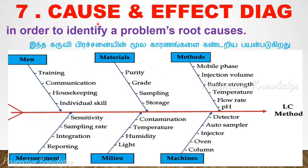The seventh tool is the Cause and Effect Diagram, also called the Fish Bone Diagram. It is used to identify the root cause of a problem in manufacturing. If there is a defect, we trace where it is coming from — what process or factor is causing it.